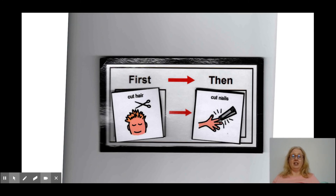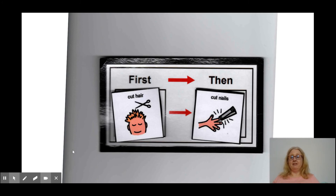I like to call it 'first broccoli, then cauliflower' — nobody likes that. So it has to be 'first broccoli, then ice cream.' You get the picture: it has to be something they're going to be very motivated by.